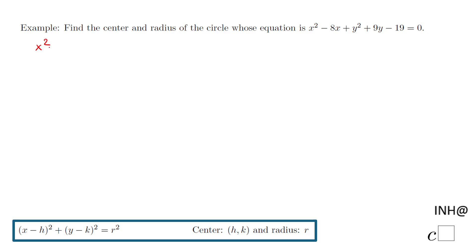First of all let me copy this equation: x² - 8x + y² + 9y - 19 = 0. So what you want to do first is to try to get this standard form of an equation of the circle, because if we have this standard form then we can get the center (h, k) and the radius r.